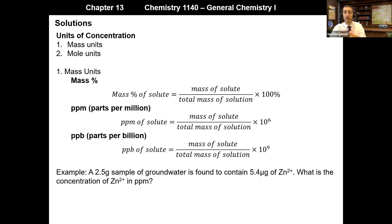A 2.5-gram sample of groundwater is found to contain 5.4 micrograms of zinc ions. This is where, if we were to calculate the molarity, it might not be super helpful. We're asked: what is the concentration of Zn²⁺ in parts per million? Parts per million is mass of solute divided by mass of solution, but I need to make sure my mass units are the same, because parts per million has no units — they cancel out.